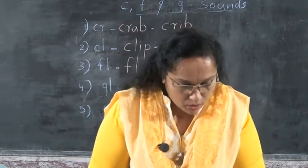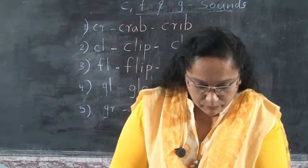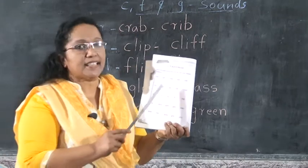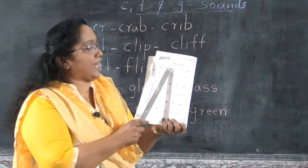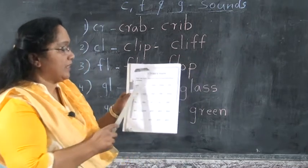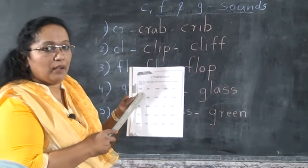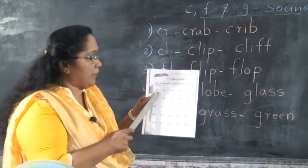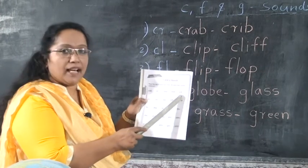All of you, take out your worksheet, children. Take your worksheet. One word is different from others — C, F, and G sounds. Read the words aloud and circle the word that sounds different. First: which sound is this? CR. Crab — C-R-A-B, sat — S-A-T, cross — C-R-O-S-S, cram — C-R-A-M, crib — C-R-I-B. Which is the odd one out?